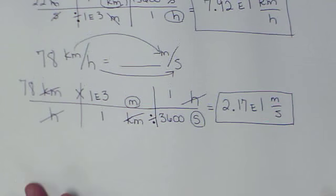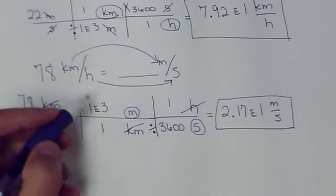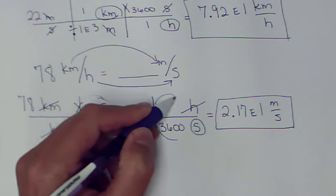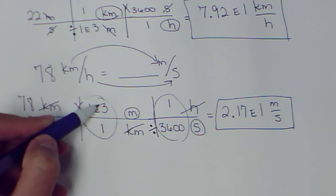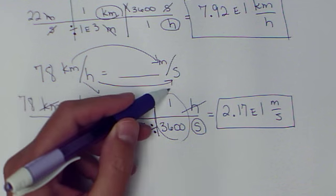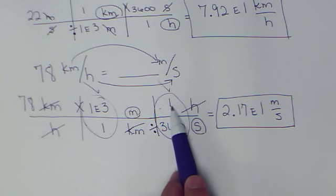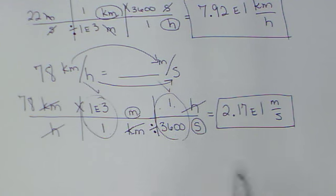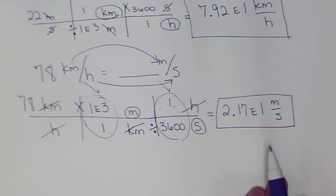Alright, make sure you don't get these numbers confused. I have students say that 1 meter is equal to 1,000 kilometers all the time. Just thinking process and not logical. So go back and check yourself. I have students say that 3,600 hours is equal to 1 second. So be careful not to make those mistakes.